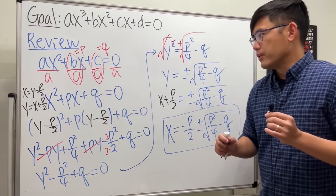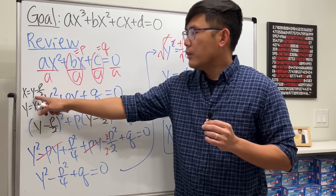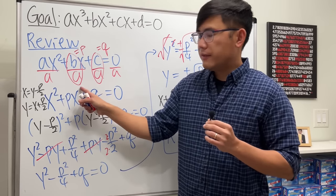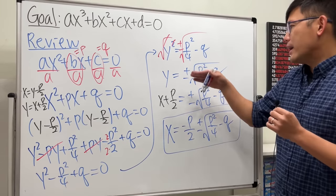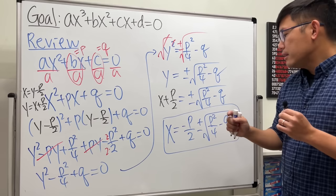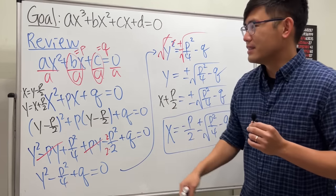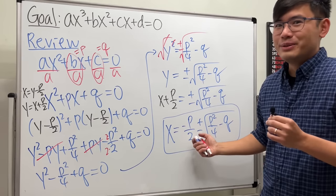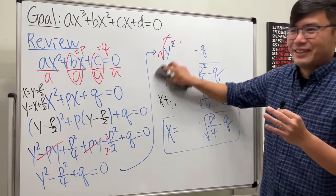Here are a few things to pay attention to. First, the translation — the substitution — so that in the y-world we didn't have the first power term; it's just y², so no y, and with that we were able to just take the square root on both sides. Later on this formula is going to help us as well with the cubic formula.